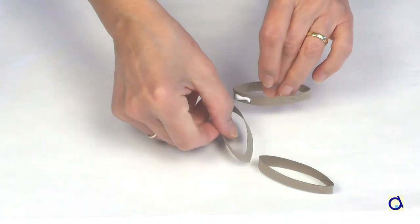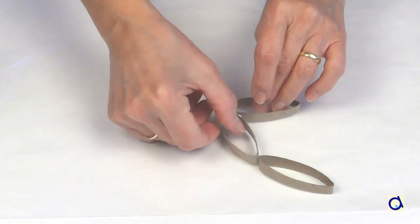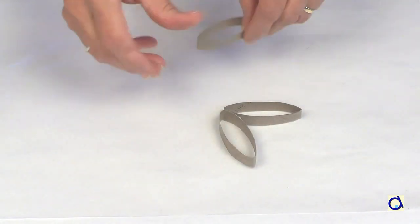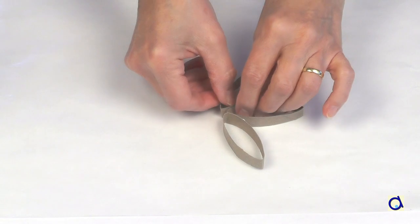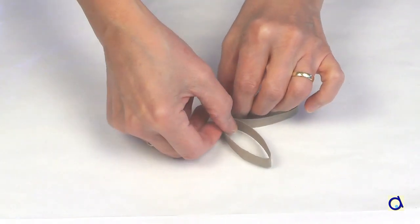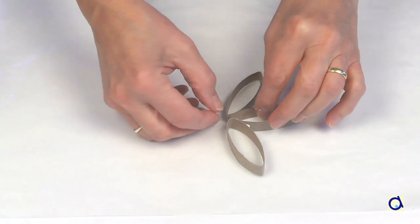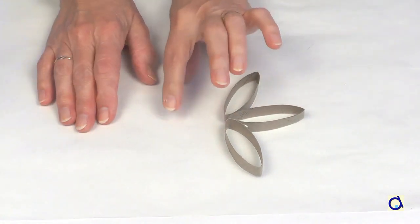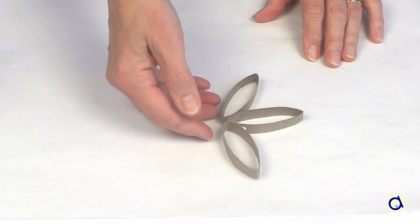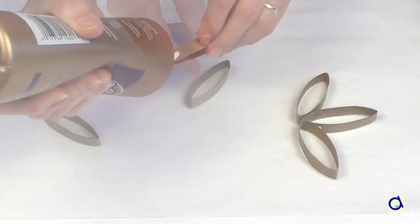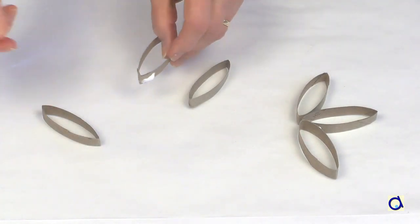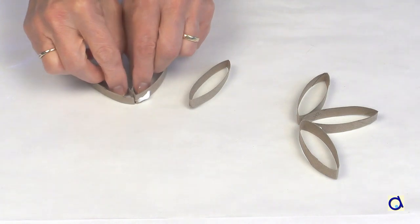Glue the slices of tube together with white glue at one of their tips. The easiest way to proceed is to put a bit of white glue on one tip of the slices of tube and then glue two more slices of tube on either side. You get the equivalent of half a flower with three petals. Do the same thing a second time.